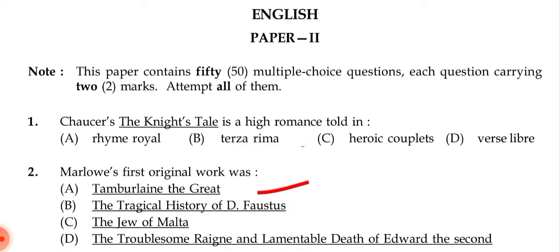The first question: Chaucer's 'The Knight's Tale' is a high romance told in — options are: (a) rhyme royal, (b) terza rima, (c) heroic couplets, (d) vers libre. The correct answer is (c) heroic couplets. Please verify the answers I give here.